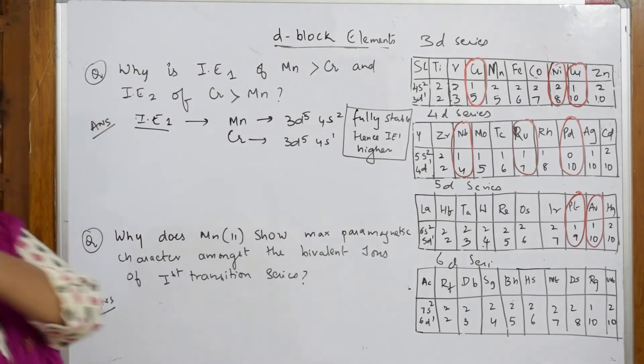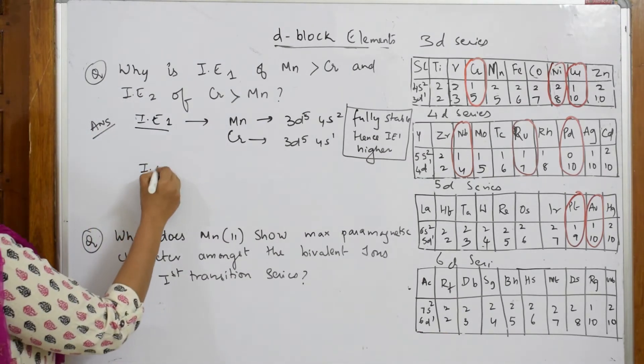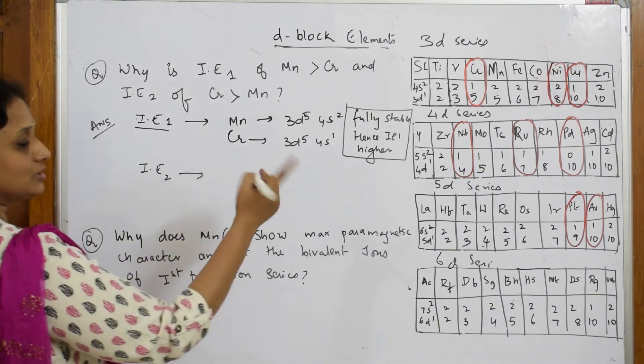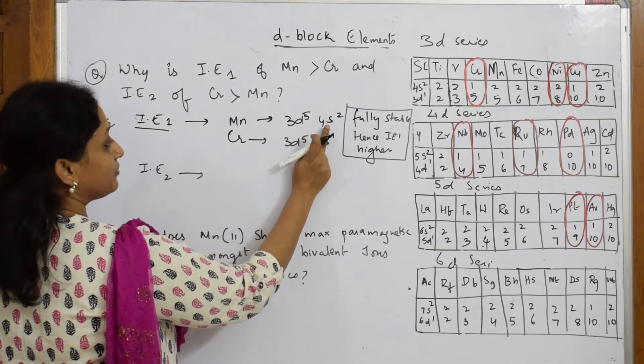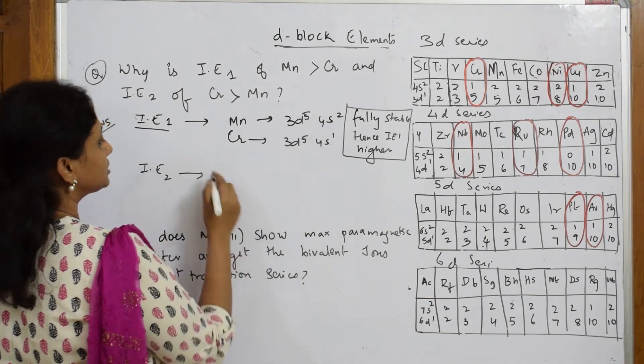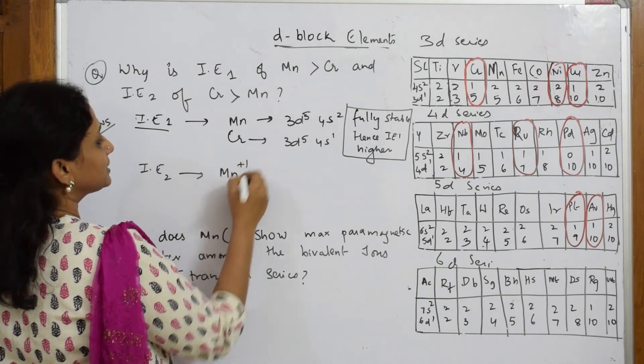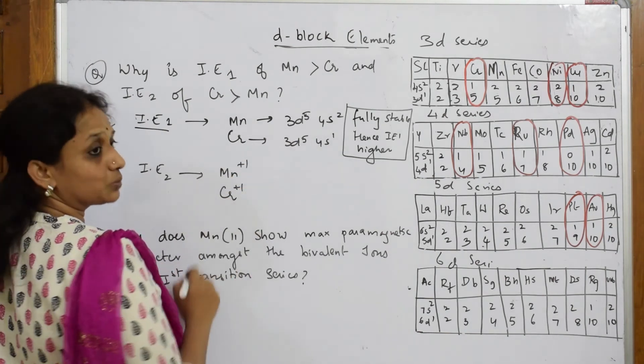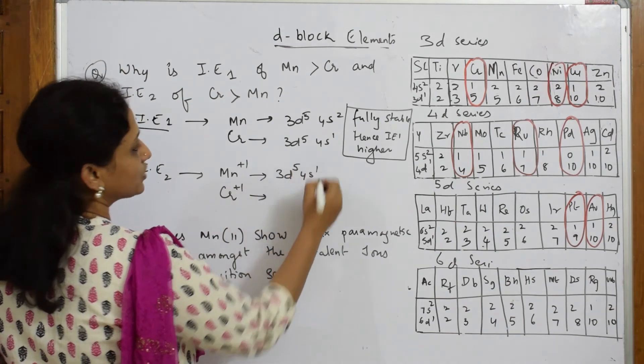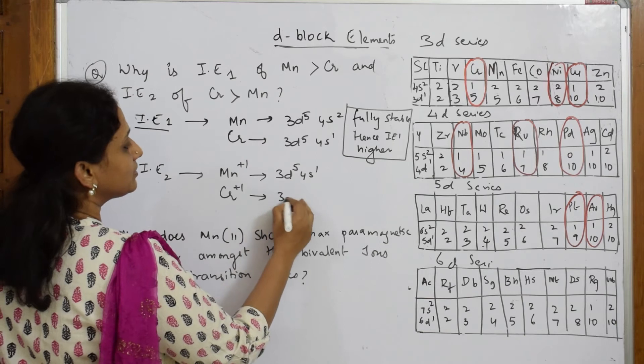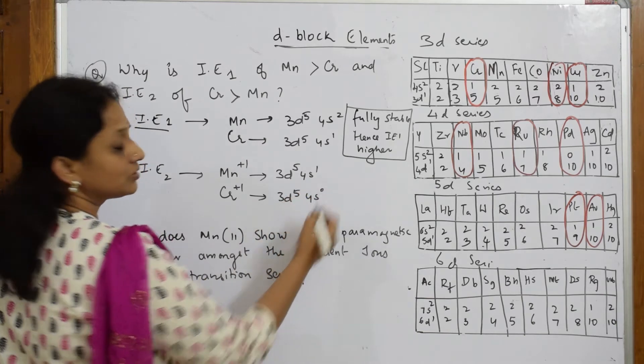When you're going to speak about IE2, now you're going to take out one electron from the outermost electron. So this becomes Mn+1 and Cr+1. Then Mn+1 is 3d5 4s1, and Cr+1 becomes 3d5 4s0.